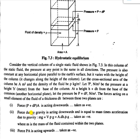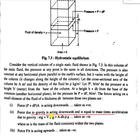The force due to gravity is acting downward and is equal to mass times acceleration due to gravity. So Mg equals volume times density times g. Volume V equals area A times dH, so the gravity force equals A·dH·rho·g, and this should be taken as negative.